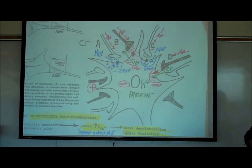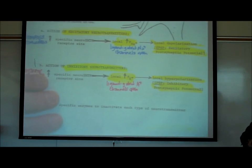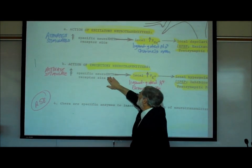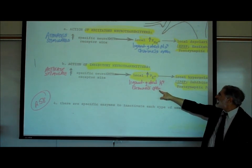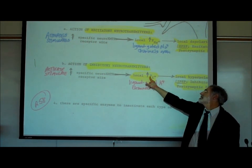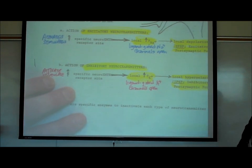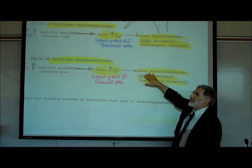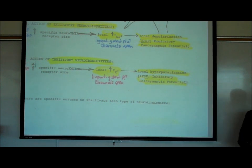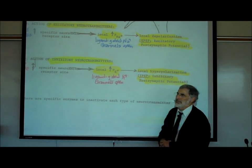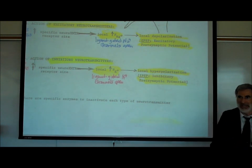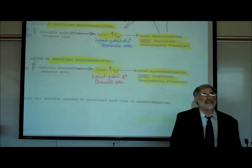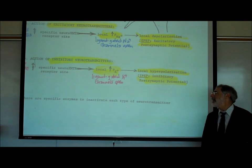The action potential travels down neuron B, causing release of an inhibitory neurotransmitter shown in red, which activates a red receptor site. If this neurotransmitter opens up potassium ion channels, potassiums — which are mostly inside the cell — start to flow out. Positive charged potassiums flowing out makes the inside of the cell more negative. This is known as a local hyperpolarization or IPSP — an inhibitory postsynaptic potential — making it less likely to fire an action potential.